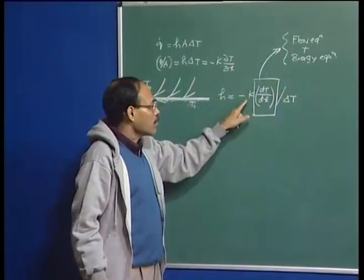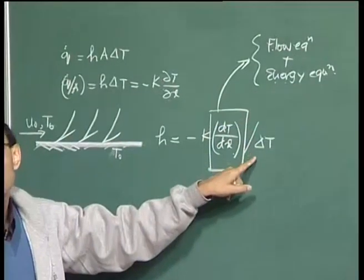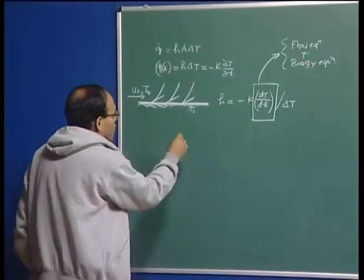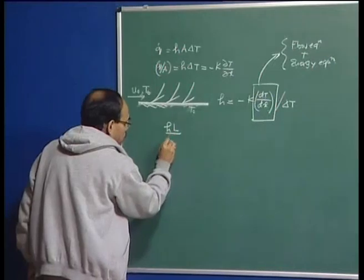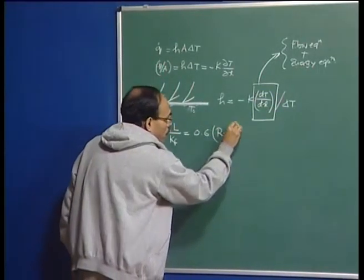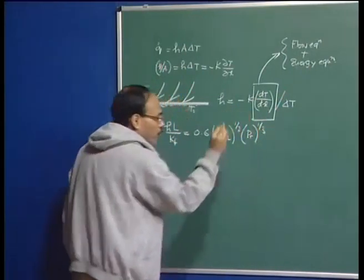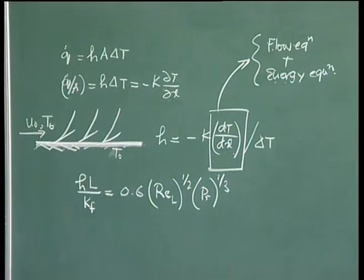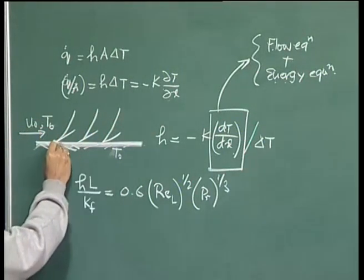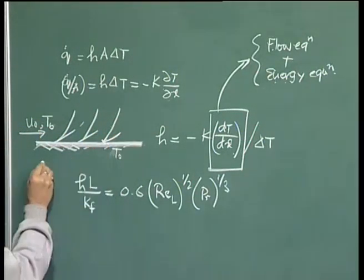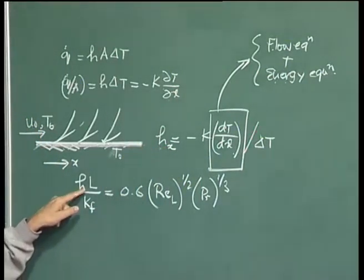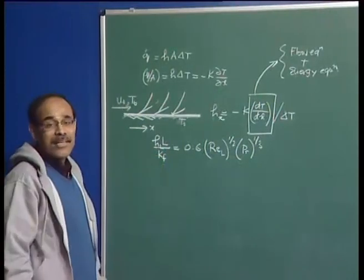Having obtained the temperature gradient, I can multiply by the thermal conductivity and divide by the driving force to obtain the heat transfer coefficient. In this particular case, for flow over a flat plate, this is the forced convective heat transfer correlation. This gives the local heat transfer coefficient, since the slope varies at every location along x, and h is the plate average heat transfer coefficient.